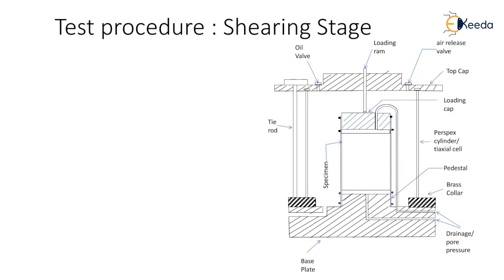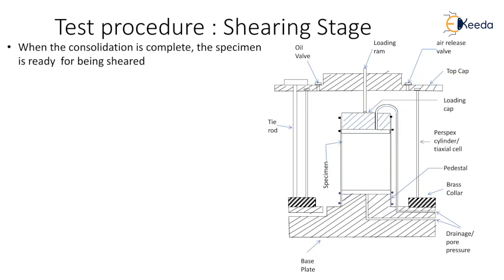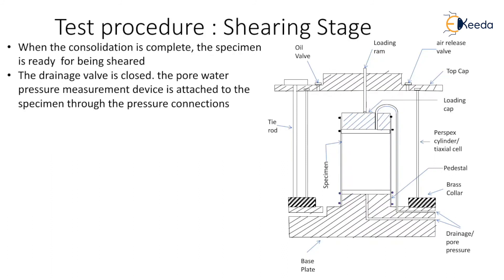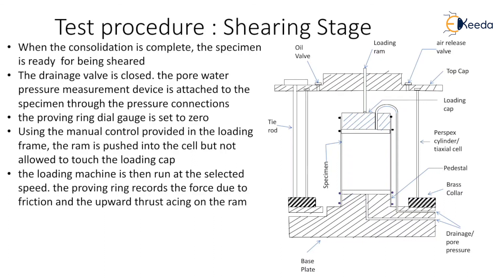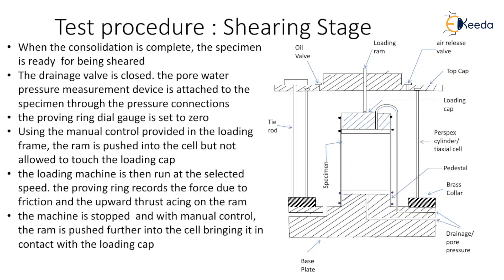Now let us come to the second stage, the shearing test. When consolidation is complete, the specimen is ready for shearing. The drainage valve is closed and the pore water pressure measurement device is attached to the specimen through the pressure connections. The proving ring dial gauge is set to zero using the manual control provided in the loading frame. The ram is pushed into the cell but not allowed to touch the loading cap. The loading machine is then run at the selected speed. The proving ring records the force due to friction and the upward thrust acting on the ram. The machine is stopped and with the manual control the ram is pushed further into the cell to bring it in contact with the loading cap.